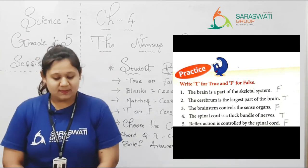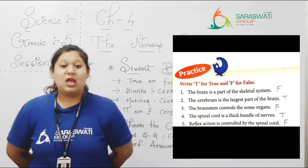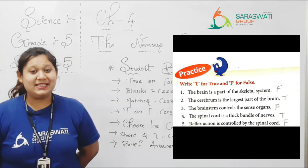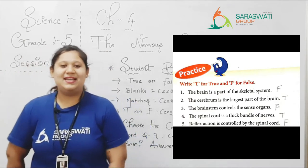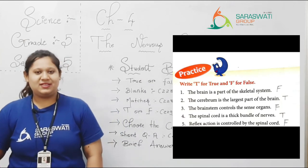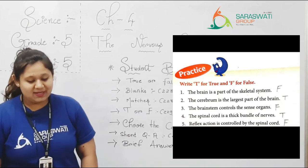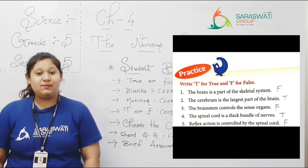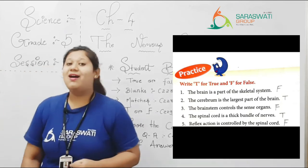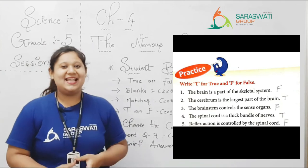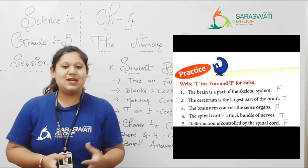Number 1: The brain is a part of the skeletal system. Brain hai, woh skeletal system ka part hai — no, it is not. So we write F. Number 2: The cerebrum is the largest part of the brain. Yes, that is the largest part of the brain. Write down T.